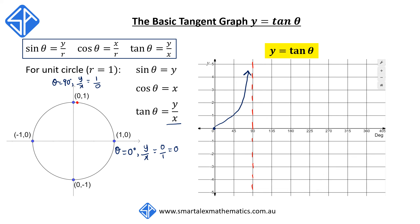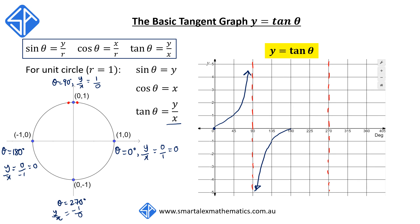If we are just past 90 degrees, we're in quadrant 2 where x is negative and y is positive, so the function approaches negative infinity. When theta equals 180 degrees, y divided by x is 0 divided by negative 1, which equals zero, so the function returns to zero. At theta equal to 270 degrees, y divided by x is minus 1 divided by 0, which is again undefined, giving another asymptote. Just below 270 degrees, x and y are both negative so the ratio is positive, meaning the function approaches positive infinity.